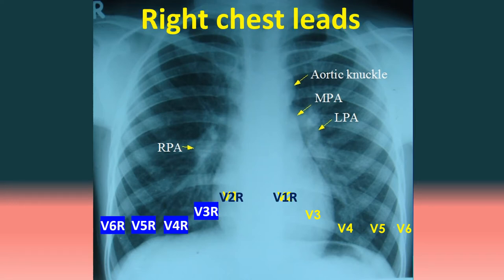Right chest leads are recorded from the corresponding positions on the right side. In right chest leads, V1 becomes V2R and V2 becomes V1R, so one needs to record only from V3R to V6R. However, only V3R and V4R are usually recorded to detect right ventricular infarction.